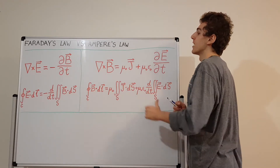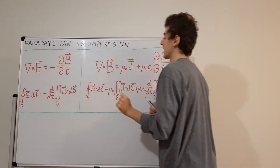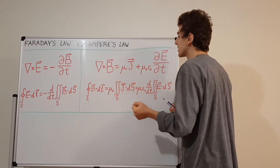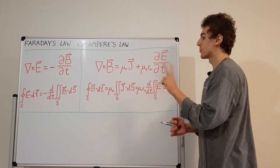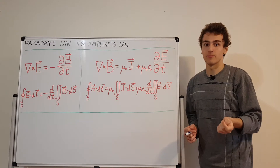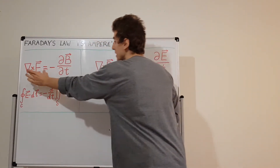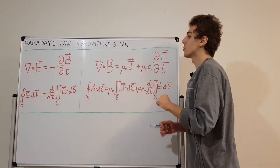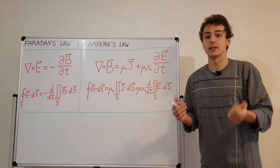Another important observation is that there is no equivalent term for the current J in the electric field case — this is unique to magnetism. For magnetism, you can generate rotation or circulation in two different ways: you can have currents, or you can have changing electric fields. For electric fields, you can only generate circulation from a changing magnetic field. There is no equivalent of the current density vector J.